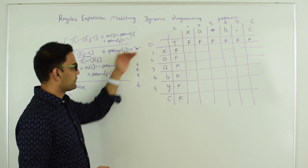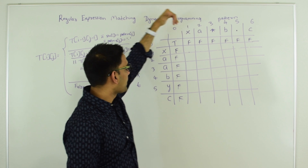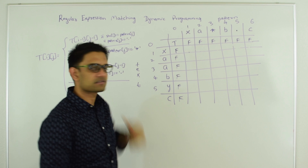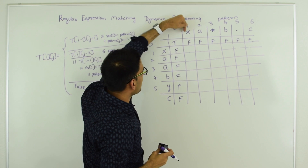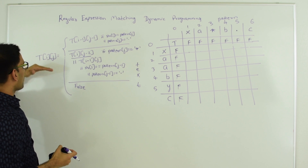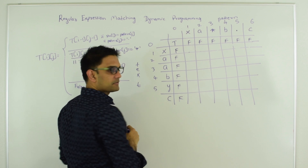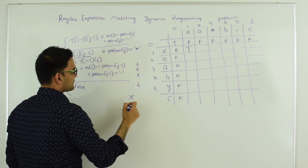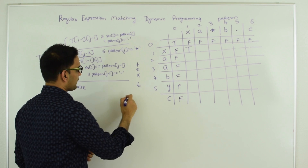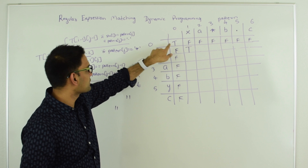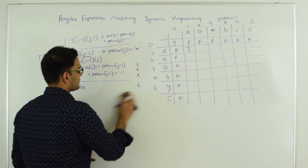Now let's fill T[1][1]. We're checking if X equals X — they are the same, so T[1][1] = T[0][0] which is true. At T[1][2], the pattern character is A and text character is X — they're different, so this is false. At T[1][3], the pattern character is star, so we check zero occurrences of A by going two steps back — T[1][1] is true, so T[1][3] is true. This makes sense: X A star can represent just X with zero occurrences of A.